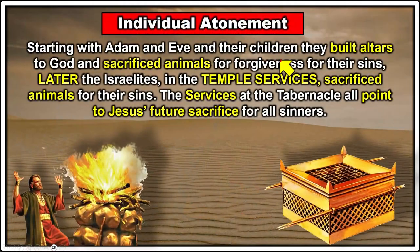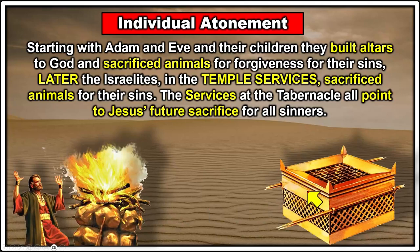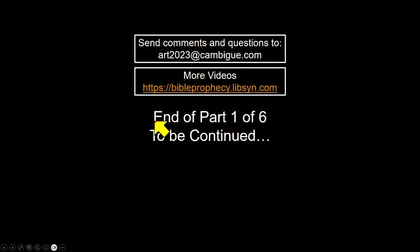Starting with Adam and Eve and their children, they built altars to God and sacrificed animals for forgiveness of sins. Later the Israelites in the temple service also sacrificed animals for their sins. All the services at the tabernacle point to Jesus' future sacrifice for all sinners. Whether sacrifices were done on a stone altar or in the tabernacle, they were all pointing forward to the sacrifice that Jesus would make on the cross.